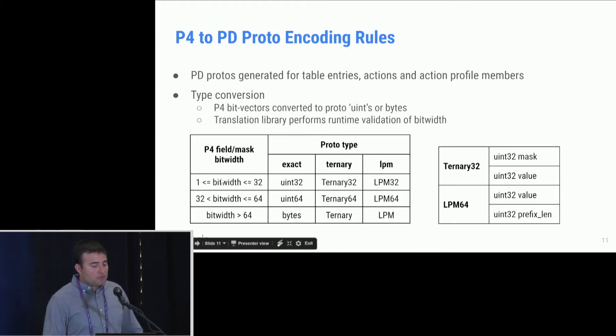So here is an example. For instance, you have a field, let's say, like ether type, which is 16 bits. The prototype that you'd use for an exact match on that field would be a Uint 32. And if you wanted to do a ternary match, you would define a ternary 32, which has the mask and the value. And similarly, LPM would have the value and the prefix length. Now, if I wanted to do a match on ether type, and when creating the flow entry, the SDN app writes something that is beyond the scope of the 16 bits, then the translation API at runtime is going to catch this error. So that way you'll have type safety as well.